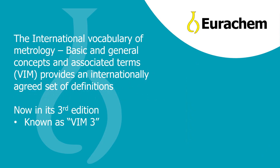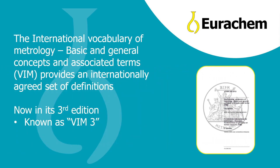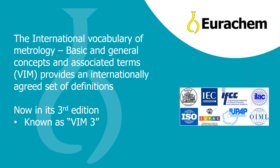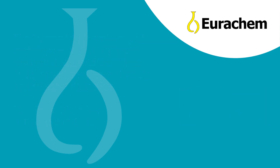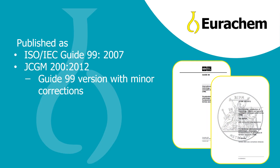To this end, the International Vocabulary of Metrology, known as the VIM, was developed and is now in its third edition. VIM 3, as it is commonly known, was published by the Joint Committee for Guides in Metrology, Working Group 2, which has representatives from a number of international organisations. VIM 3 is available as ISO Guide 99 or as JCGM 200.